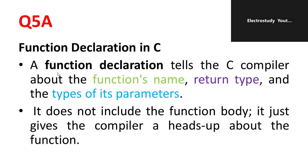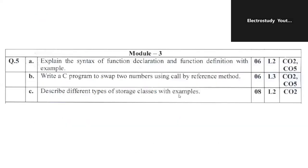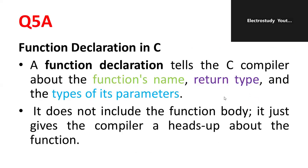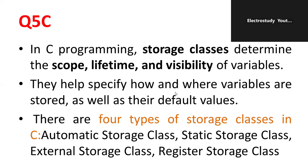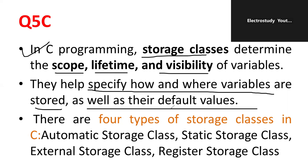Question number 5c. Describe different types of storage classes with examples. This is also one of the most important theoretical type questions. Like 4 types of classes will be there, each class carries 2 marks. 4 and 2 is equal to 8 marks. First of all, you have to talk about the different type of storage classes, which determine scope, lifetime and visibility. That is the importance of storage class. They help to specify how and where the variables are stored and default values.